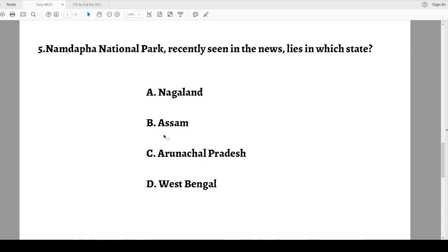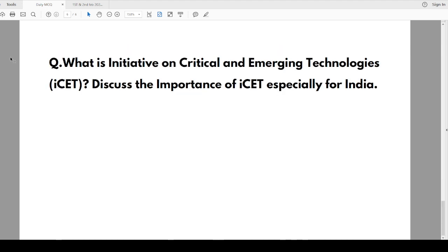Now we will see the answers for the previous day's current affairs from 31st January. First one: C, Second: D, Third: B, Fourth: A, Fifth: B. Main answer writing question: What is the Initiative on Critical and Emerging Technologies ICET? Discuss the importance of ICET especially for India. Write your answer and send to me. Thanks all for joining with us.